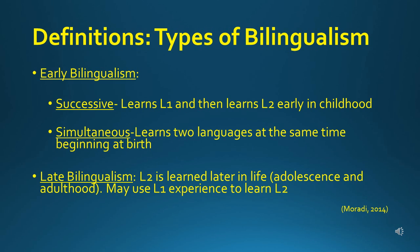Bilingualism is also known as dual language learning and means the child knows two languages. Bilinguals can be categorized into early bilingualism and late bilingualism. In early bilingualism, we can further categorize them into two types: successive and simultaneous bilingualism.